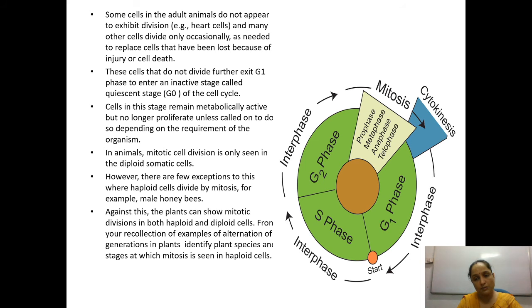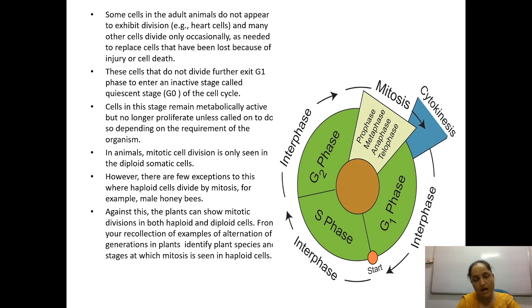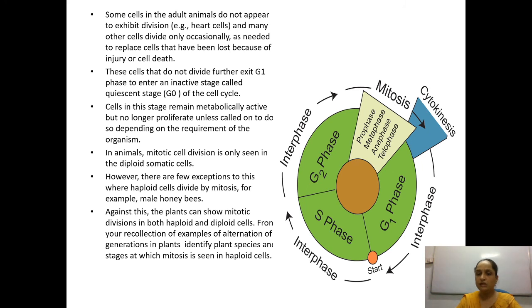In meiosis, there will be four daughter cells, and the daughter cells produced by meiosis are haploid in number (n chromosomes). The daughter cells produced by mitosis are always diploid. That is why mitosis is called equational division. Meiosis is called reduction division — from one parent cell, four daughter cells are produced, each having n number of chromosomes. This process is required for the formation of gametes such as sperm and ovum.